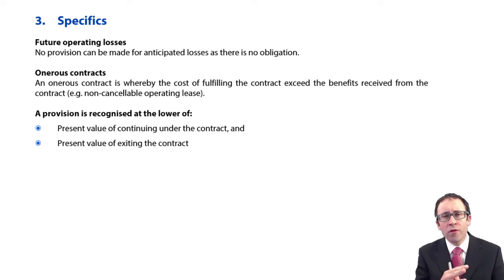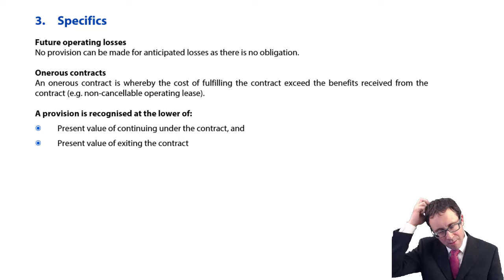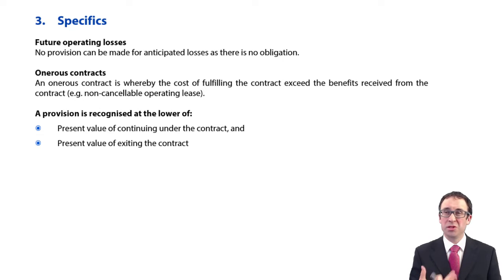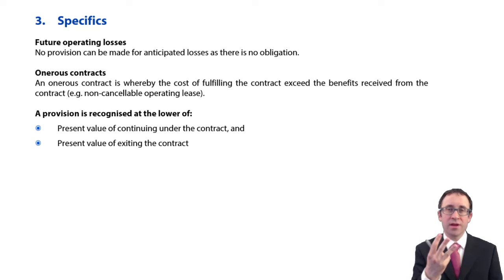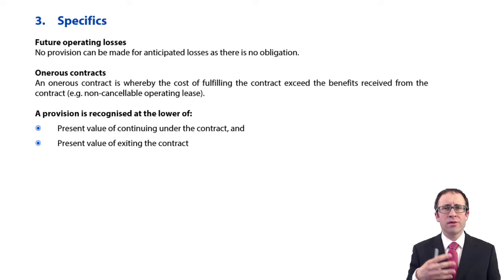We've covered the basics or the essentials of IAS 37, looking at provisions and contingencies. Maybe you've had a couple of practice goes at some of the questions in the study text or revision kit. But now we need to bring in what the standard refers to as some specific areas — it has identified three specific areas that are common themes within business.